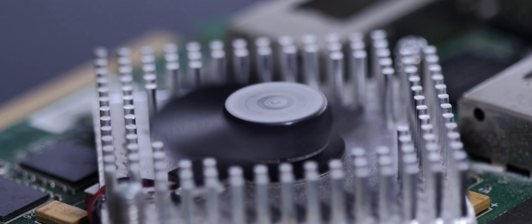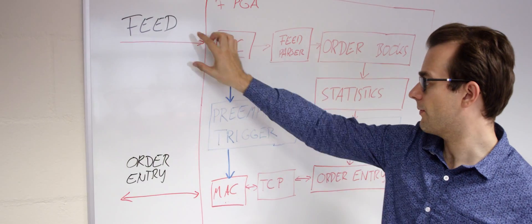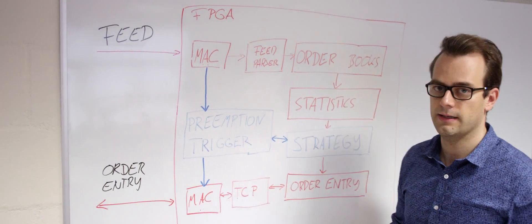Our approach has been to put the whole critical path in the FPGA. The important blocks are you have a MAC layer on both the feed and the order entry which just connects the FPGA to the Ethernet.